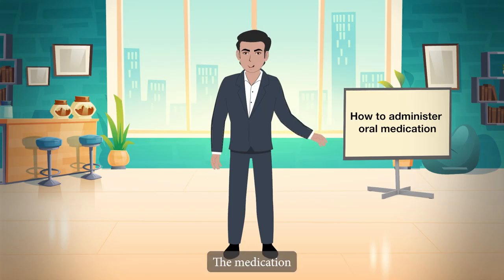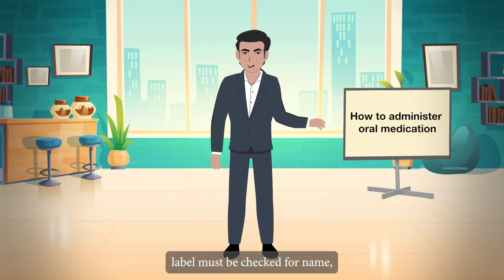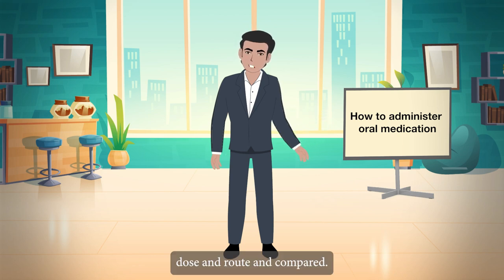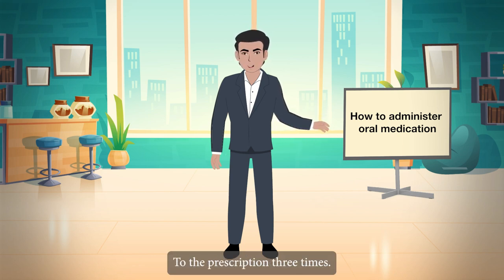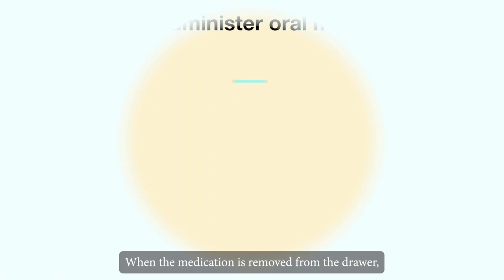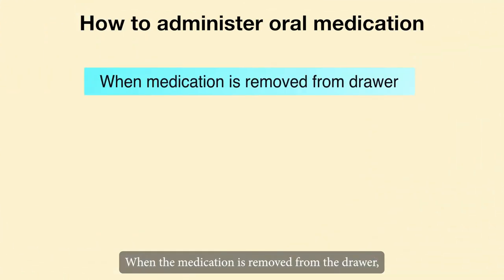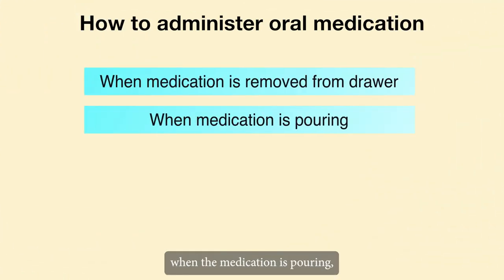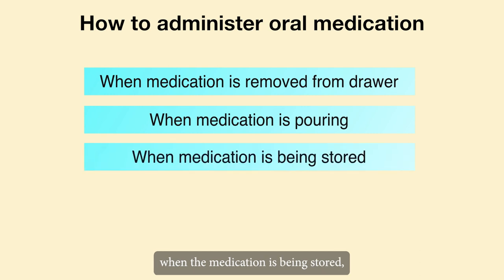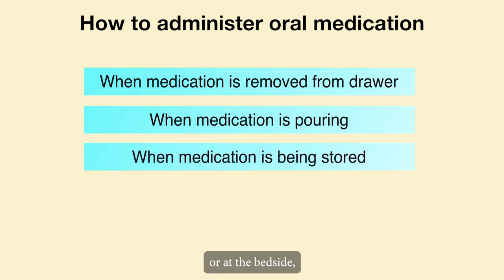The medication label must be checked for name, dose, and route and compared to the prescription three times: when the medication is removed from the drawer, when the medication is being poured, and when the medication is being stored or placed at the bedside.